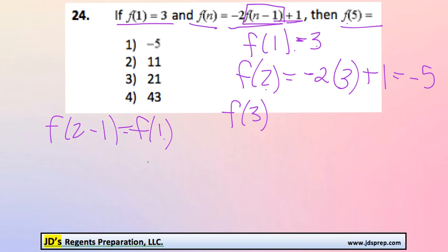Now moving on to f(3), similarly we're going to do -2 times the previous term, which is -5 in this case, plus 1. And this would get us 10 plus 1, which is 11.